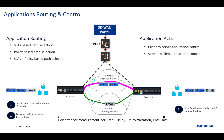One important thing to mention is performance measurement. To make this work, the system must constantly monitor performance for paths between branches — for example, branch A to branch B. When we say performance, that means delay, jitter, packet loss, and bandwidth. These SLA attributes are constantly measured and decisions are made on the fly based on performance as well as policy.